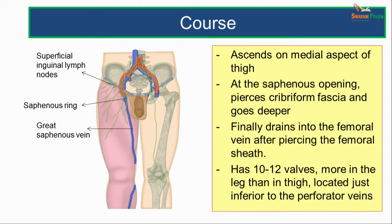The great saphenous vein, as it reaches the saphenous opening, passes through the saphenous opening, piercing the cribriform fascia and going deeper. It finally drains into the femoral vein after piercing the femoral sheath. The great saphenous vein along its course has 10 to 12 valves, more in the leg than in the thigh. These valves are located just inferior to the perforator veins.